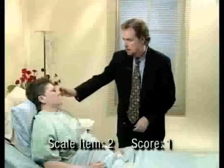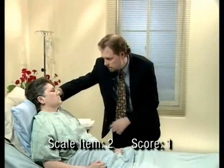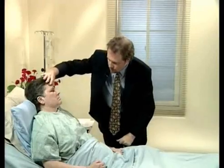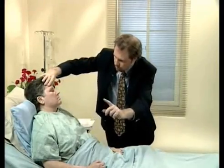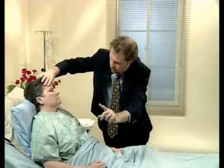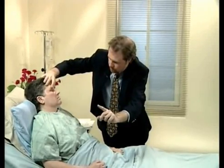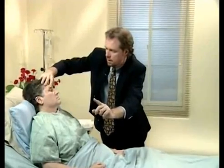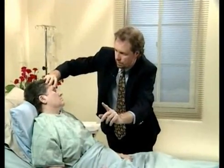Score a one for partial gaze palsy. In this demonstration, the examiner establishes eye contact and instructs the patient to look in each direction, using the oculocephalic maneuver or tracking of the examiner's face as needed. If there is a conjugate deviation of the eyes that can be overcome by voluntary or reflexive activity, also score a one. If the patient has an isolated cranial nerve paresis, such as an oculomotor or abducens palsy, also score a one.